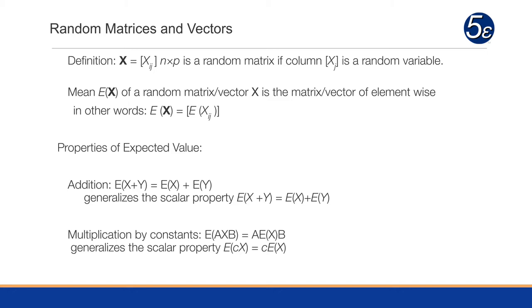The mean of that particular random matrix X is going to yield a vector. E of X is going to be equal to the expected value of each variable in our matrix. So if we have 10 variables in our random matrix X, we will have a vector of 10 means. Each column gets averaged and that yields a vector, which we call the mean vector of the matrix.